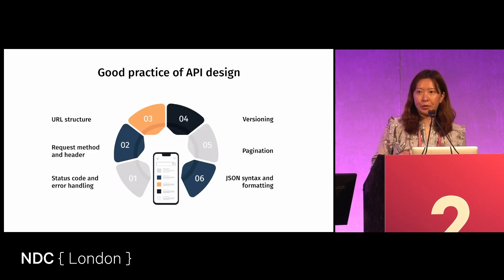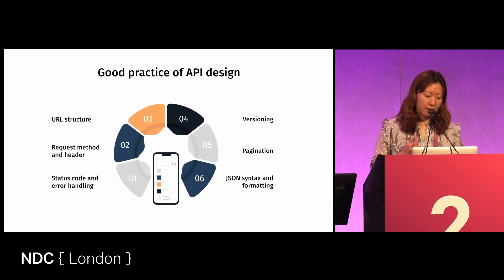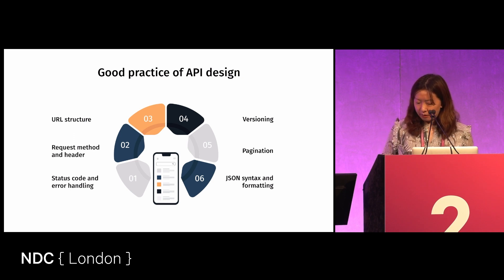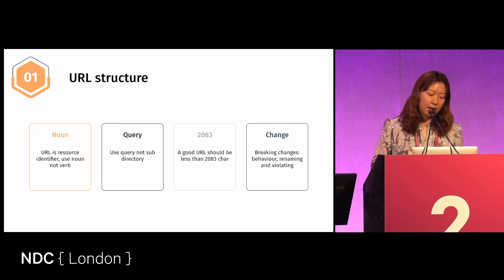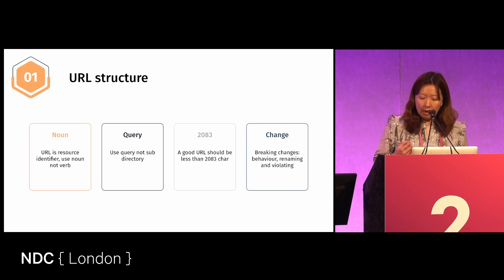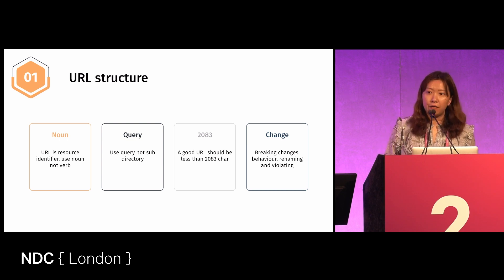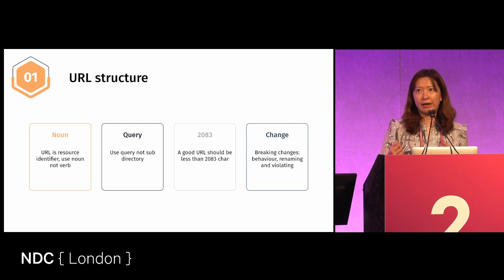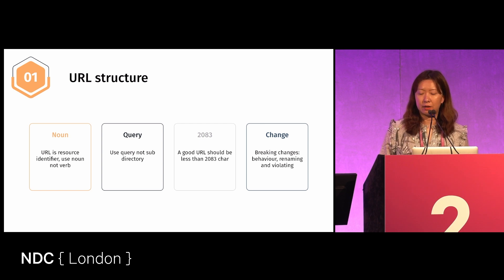So if we are going to design an API, good practices to think about are: the URL structure, the request method, error handling, versioning, and pagination. When we think about API design, look at the URL structure. The recommendation is to always use nouns and use query parameters as well. Make sure that your URL is a reasonable length. Any breaking change that will change the behavior should be kept to a minimum or well communicated beforehand — just don't deploy something overnight that breaks the front-end project straight away.